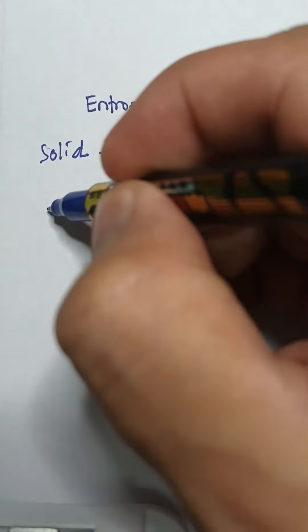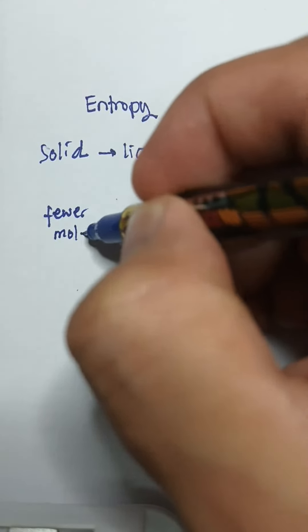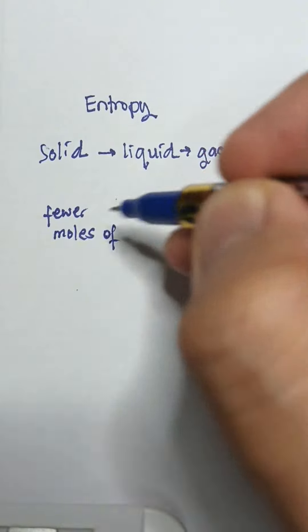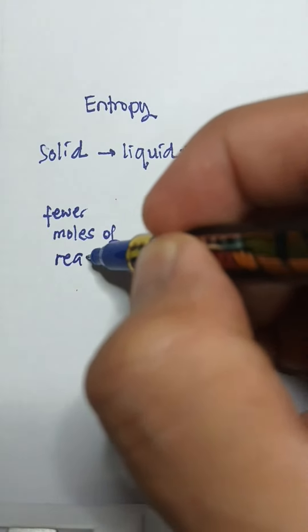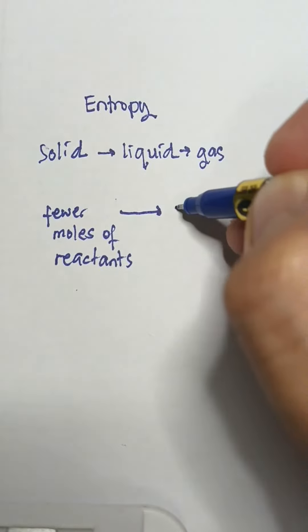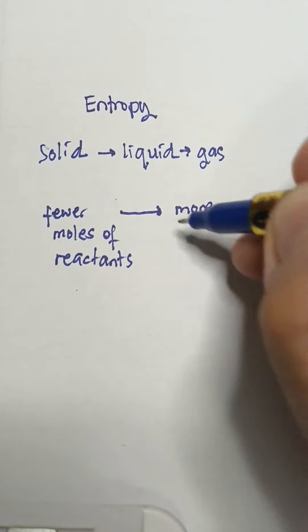As we progress from solid to liquid and into gas, we are actually increasing the degree of disorderedness in the system. The same is true if we transform from fewer moles of reactants into more moles of products.